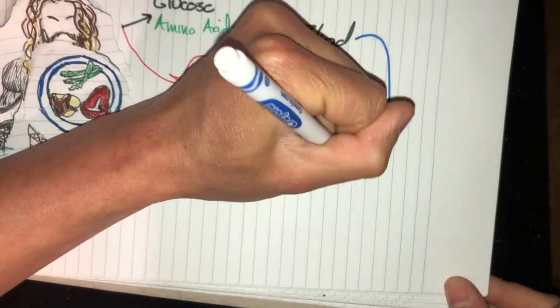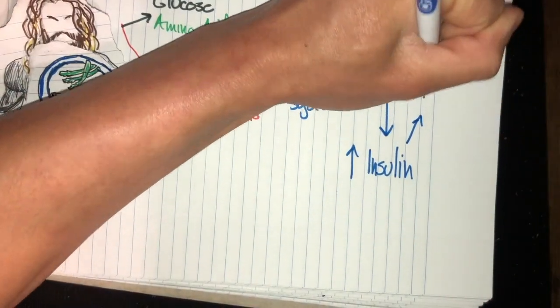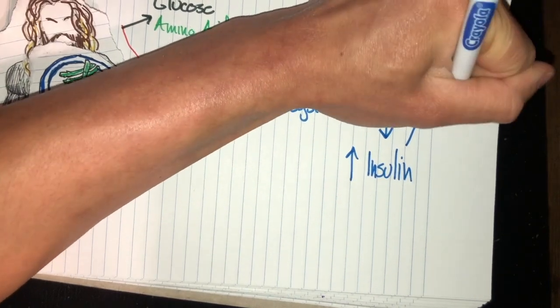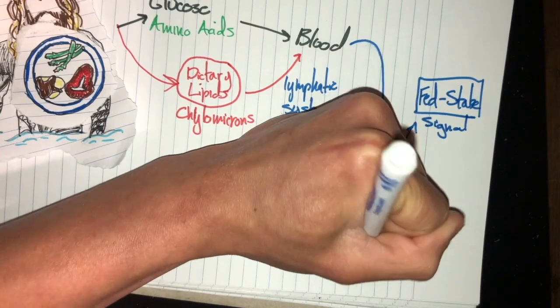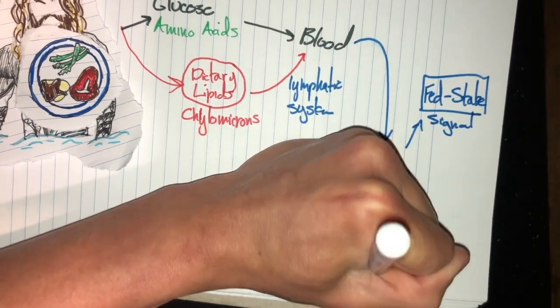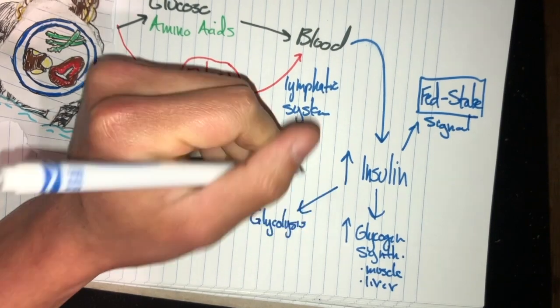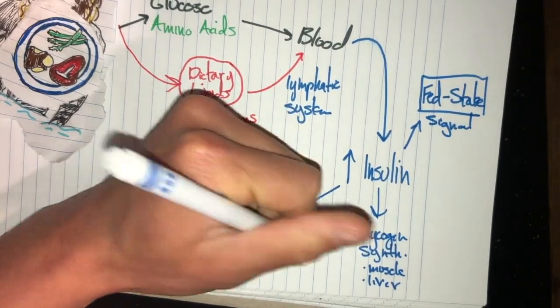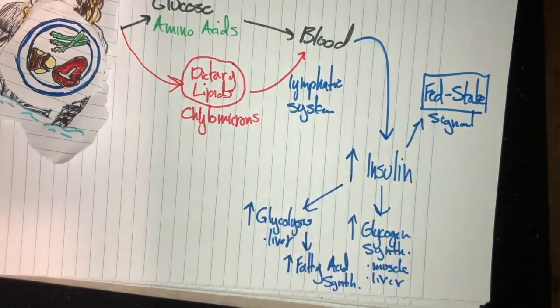This all triggers the increase of insulin secretion. Insulin secretion is actually super awesome. It can help trigger the fed state, also stimulates glycogen synthesis in both the muscle and the liver. It can also trigger glycolysis in the liver, which then ups the fatty acid synthesis.